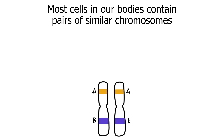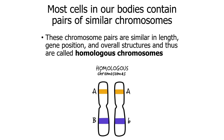Most of the cells in our body contain pairs of similar chromosomes. These paired chromosomes are very similar, nearly identical. They have the same length, the same position of things called genes, and other structures that make that chromosome look the way it does. The term we use to describe these two similar paired chromosomes is homologous. You may also just hear them called homologs.